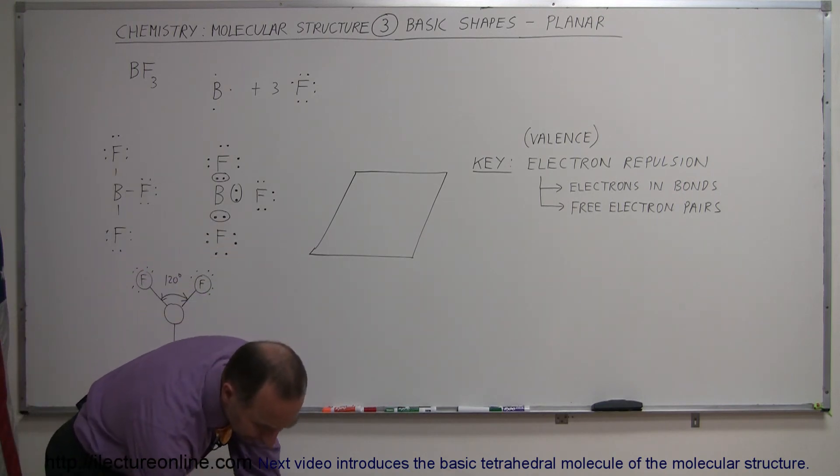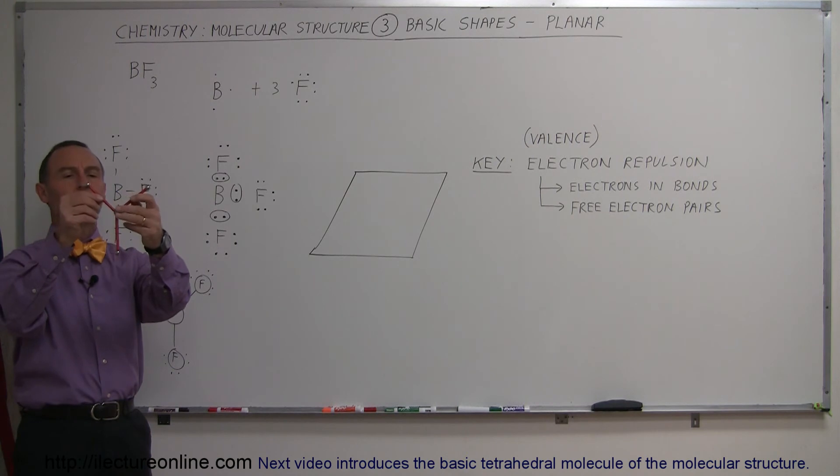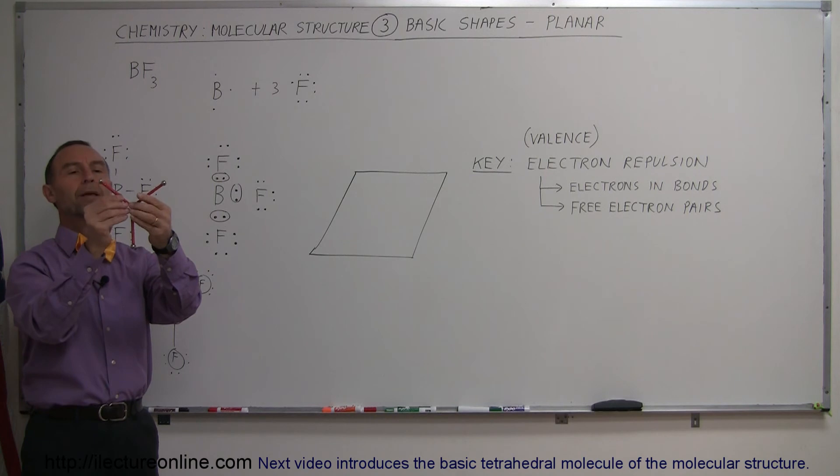And so here I have a little indication of that. That's what it should look like. We have boron in the center, three fluorine atoms like that. So the question would be, why wouldn't they bend towards one another? Why would they be in a plane?